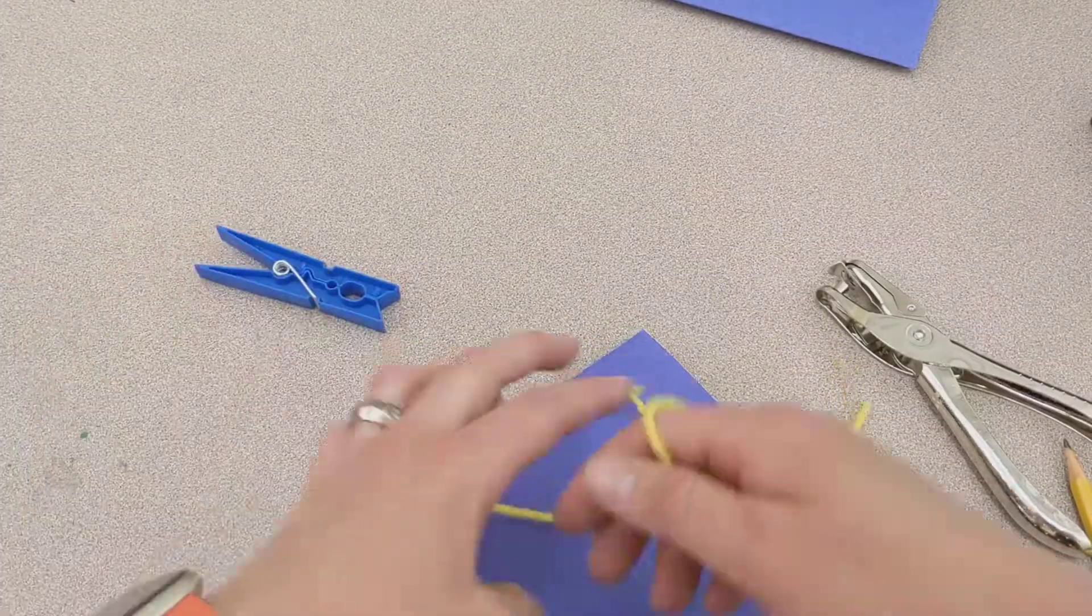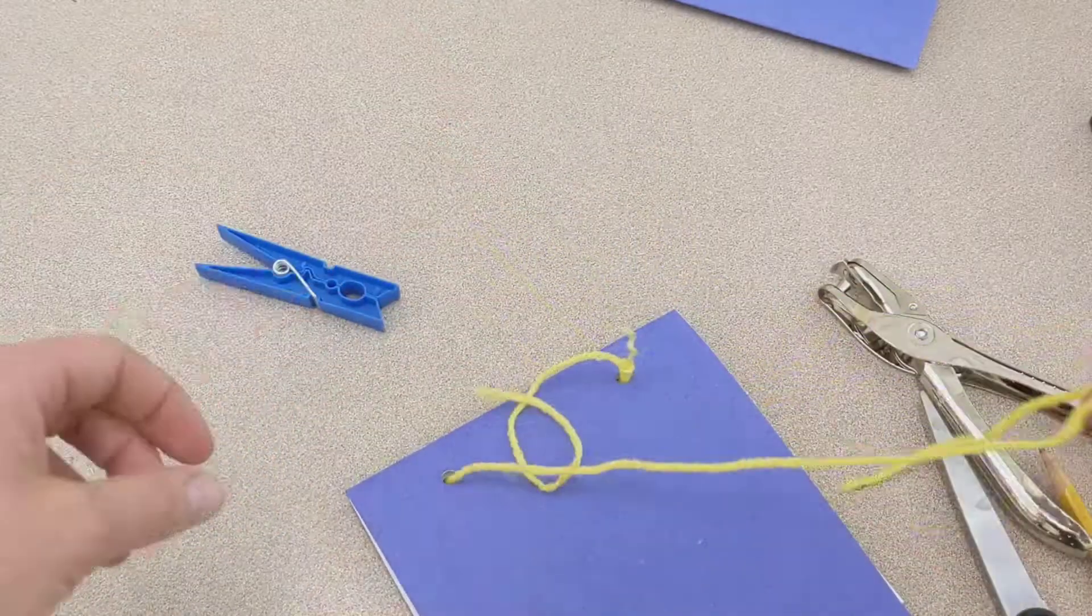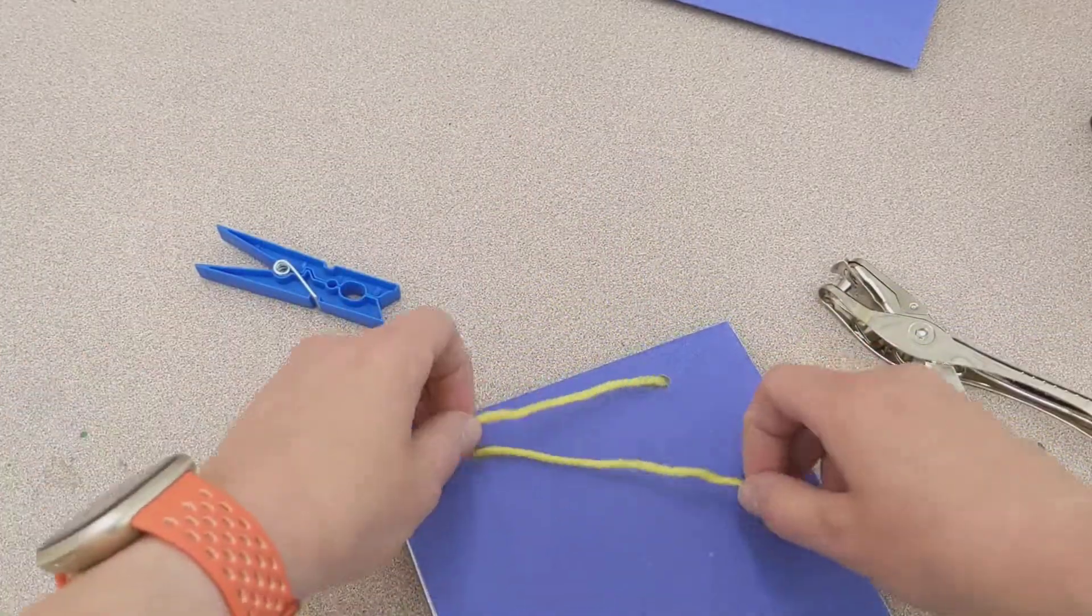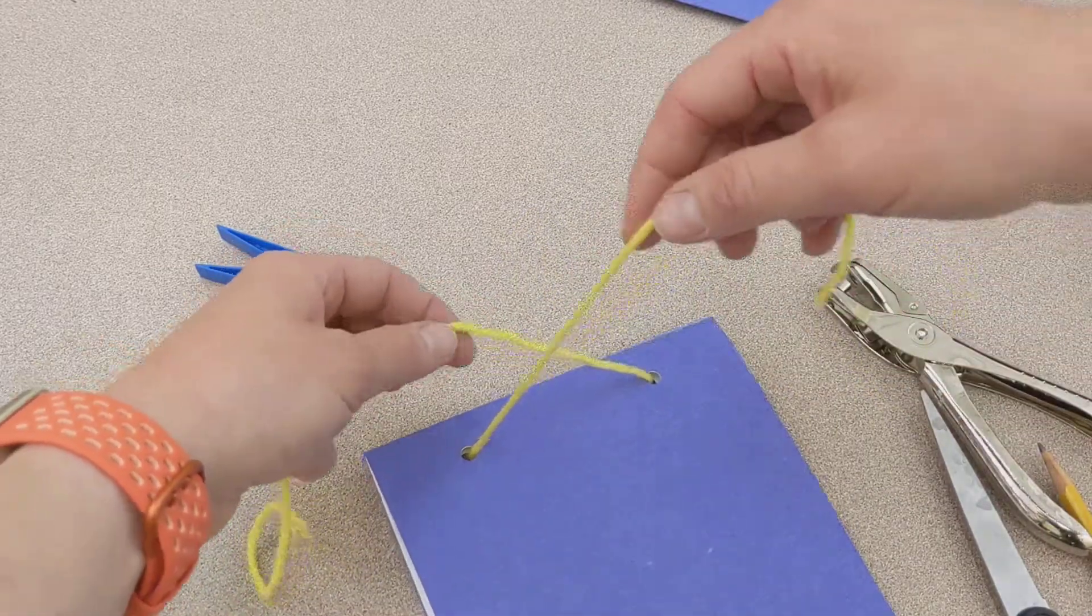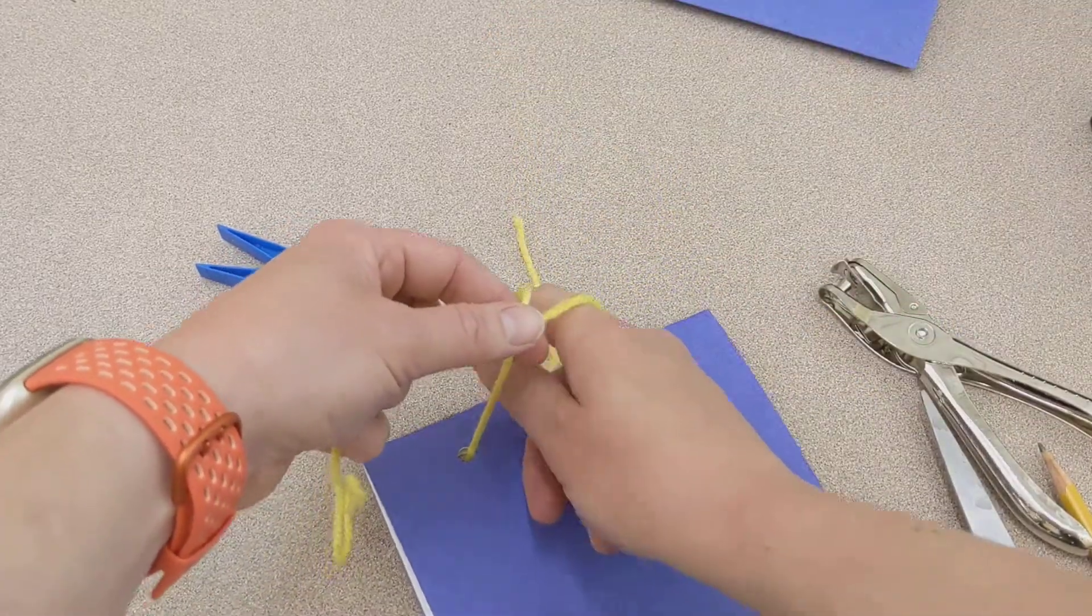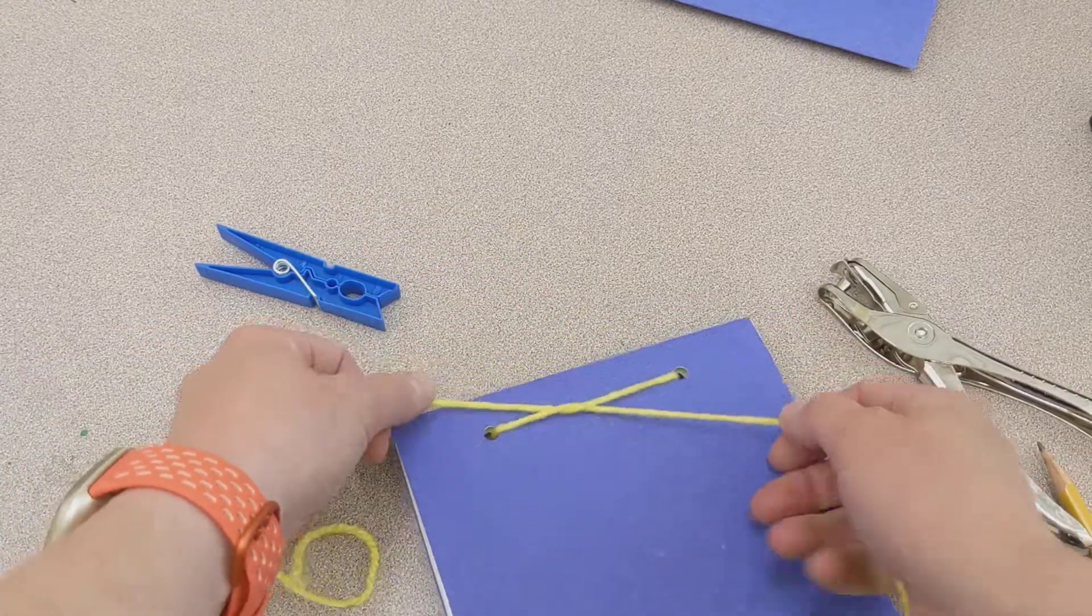Now I can remove my clothespin. Again, this gets returned where it came from, and now I'm going to tie a knot. So to make a knot, I start with an X, the one that's on top. I'm going to reach through and grab it, pull it tight.